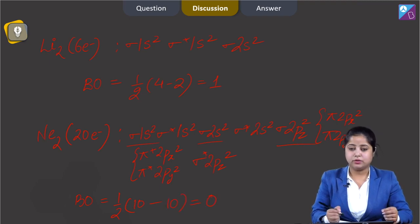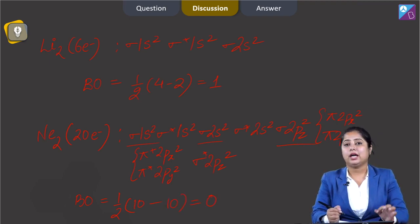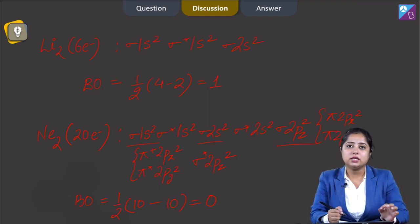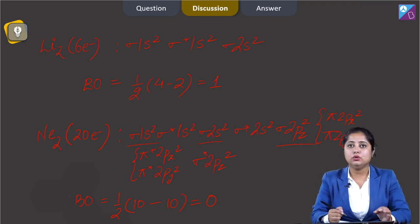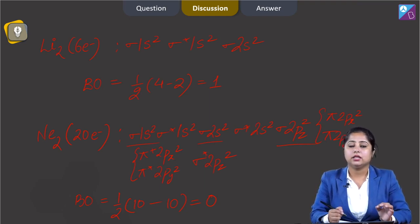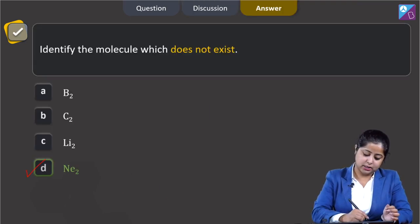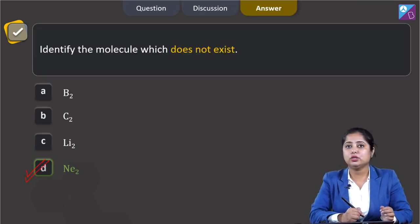The bond order equals half of (10 minus 10), which equals 0. That means among the given species, Ne2 will not exist because the bond order of Ne2 is 0. The correct answer is option D.